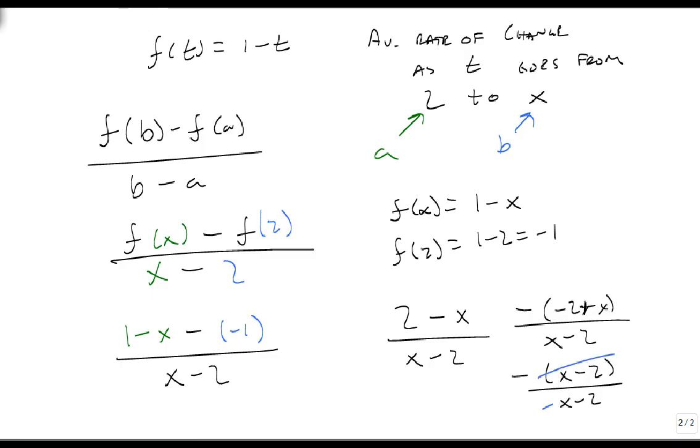And we get minus 1. So the average rate of change from 2 to any value of x in the function 1 minus t is minus 1, and that's how we find the average rate of change.